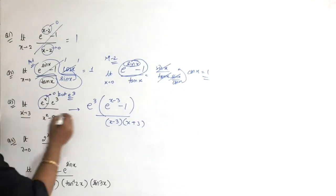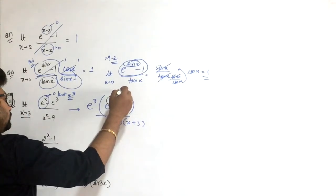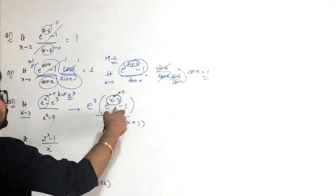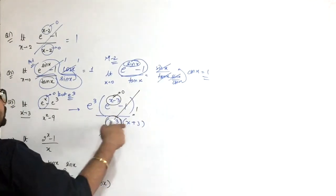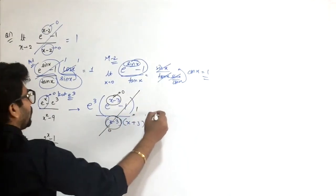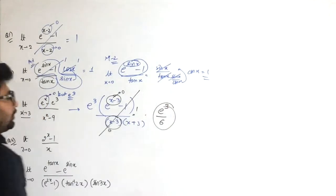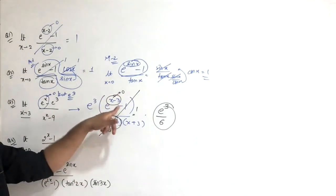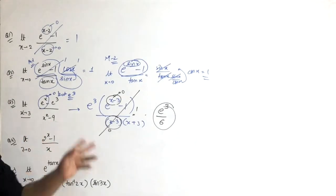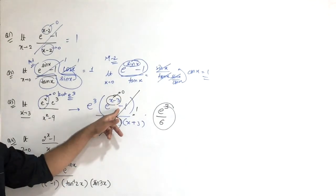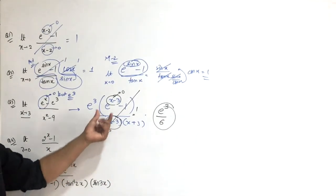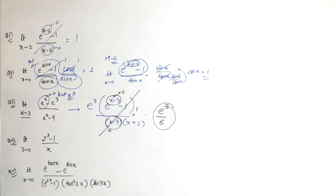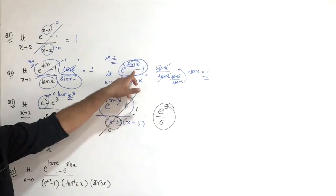When x approaches 3, this story approaches 0. e raised to power 0 goes to 1, one minus 1 is 0, and this story also goes to 0. So this expression equals 1. And when 3 is substituted, you get 6. So the answer is e cubed by 6.